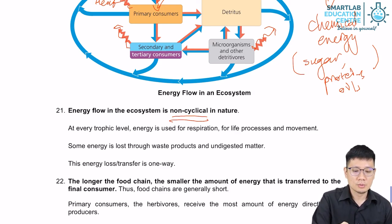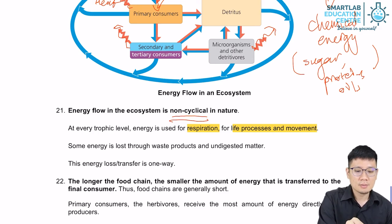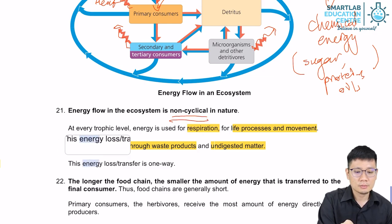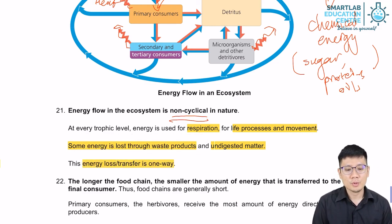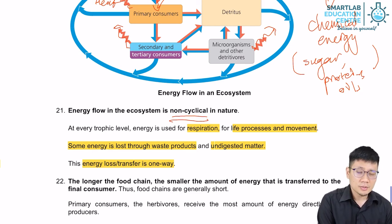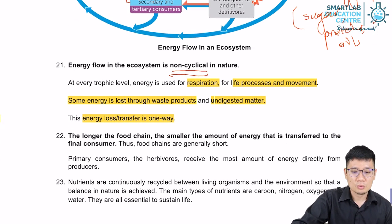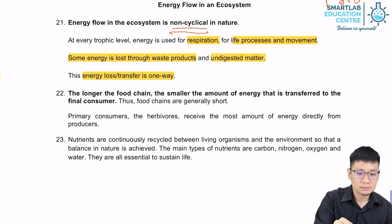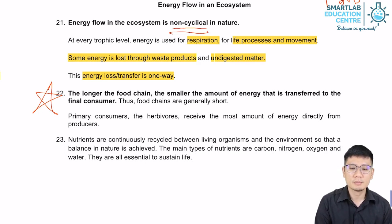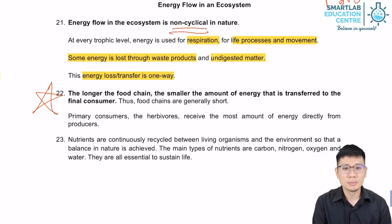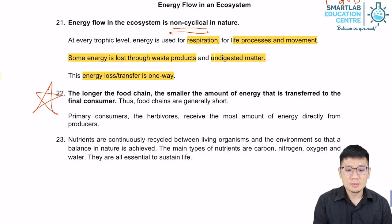At every trophic level, energy is used for respiration, life processes, and movement. Some energy is also lost through waste products and undigested matter. It is important to know that energy loss is a one-way, non-cyclical thing. Because of the energy loss from one trophic level to the next, there is this rule of thumb in biology: the longer the food chain, the smaller the amount of energy transferred to the final consumer. In order to sustain a long food chain there has to be a lot of plants and animals at the lower trophic levels — which is not very sustainable — so food chains are generally very short.